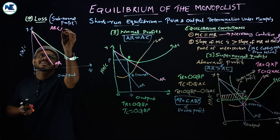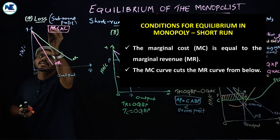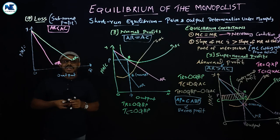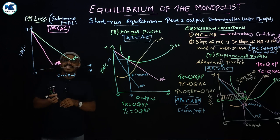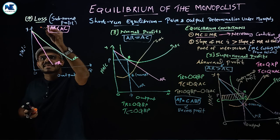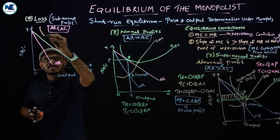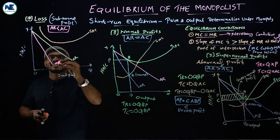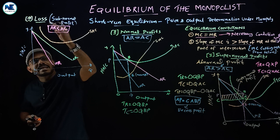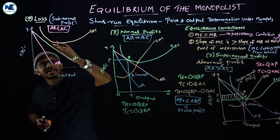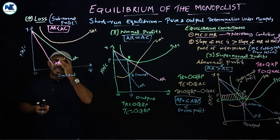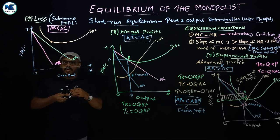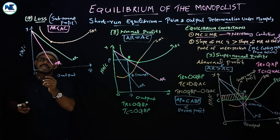Now, the average revenue is less than average cost — that is, average cost is greater than average revenue. The graph shows AR is below AC. The average cost curve reaches its lowest point.